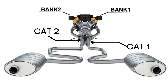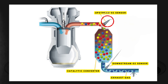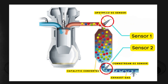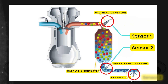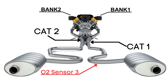Each bank has its own exhaust line, and each exhaust line is equipped with two catalytic converters. Each catalytic converter typically has two or three oxygen sensors. The upstream sensor, referred to as sensor 1, is positioned before the catalytic converter. Then there's the downstream sensor, known as sensor 2, located after the catalytic converter. In some cases, there might even be a third oxygen sensor further downstream, positioned after sensor 2. So when we talk about bank 1 sensor 3, we're focusing on the third oxygen sensor that's downstream from the engine on bank 1.